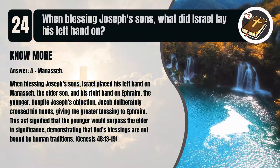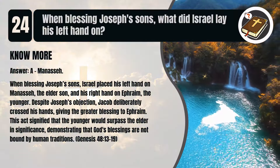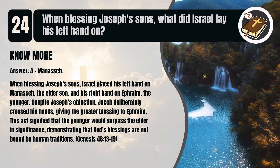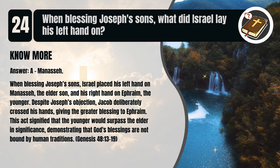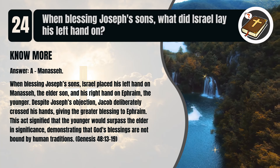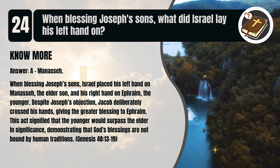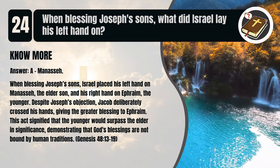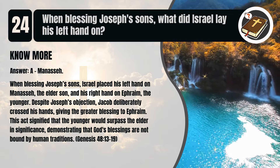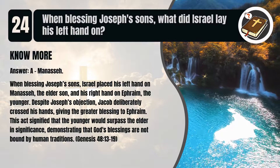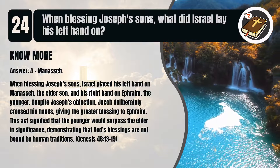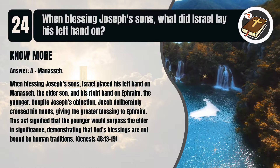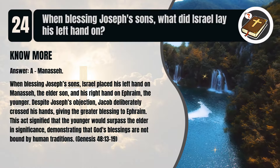That's A. Manasseh. When blessing Joseph's sons, Israel placed his left hand on Manasseh, the elder son, and his right hand on Ephraim, the younger. Despite Joseph's objection, Jacob deliberately crossed his hands, giving the greater blessing to Ephraim. This act signified that the younger would surpass the elder in significance, demonstrating that God's blessings are not bound by human traditions. Genesis chapter 48 verses 13 to 19.